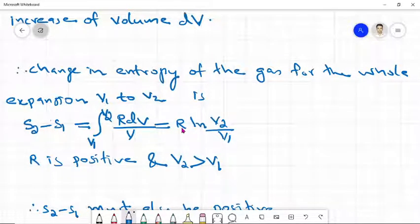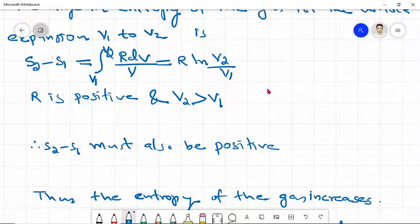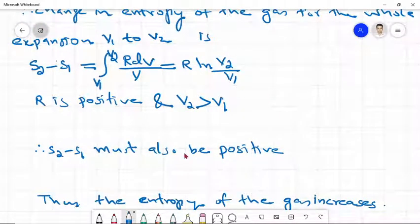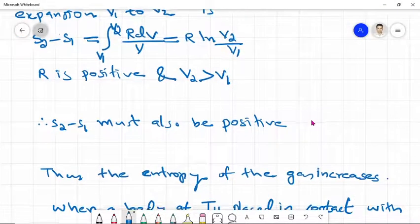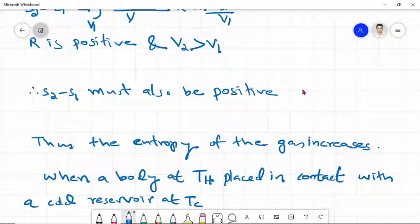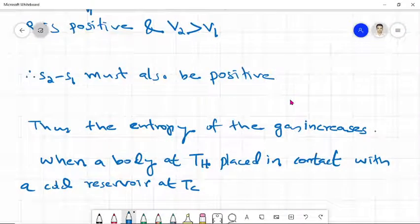Therefore S2 minus S1 must also be positive. The entropy change is positive, meaning the entropy of the gas increases.